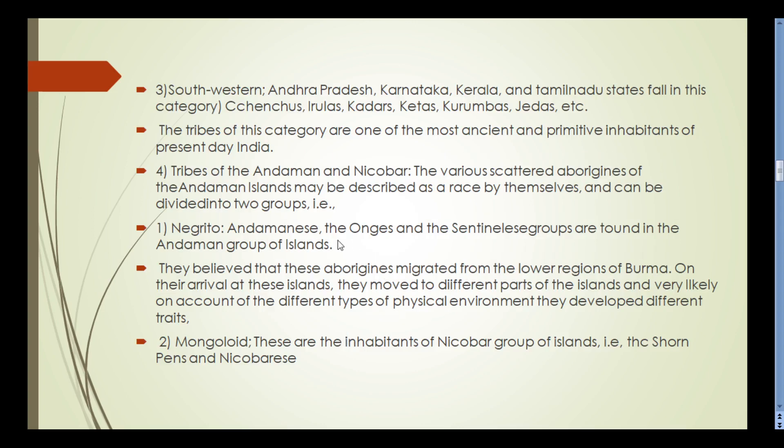Southwestern types are present in the states of Andhra Pradesh, Karnataka, Kerala, and Tamil Nadu. These include tribes such as Chenchus, Irulas, Kadas, Kotis, Kurumbas, Jenas, etc. The tribes of this category are among the most ancient and primitive inhabitants of present-day India.